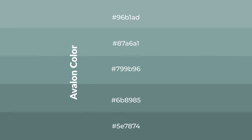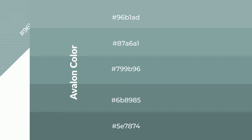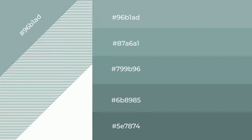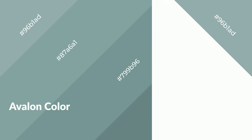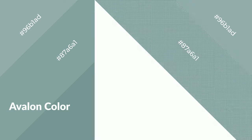To generate shades of a color, we add black to the color, and it is used in patterns, 3D effects, and layers. Shades create depth and drama. Avalon is a cool color and it emits calming, serene, soothing, refreshing, spacious, unwinding, peaceful, and relaxed emotions.